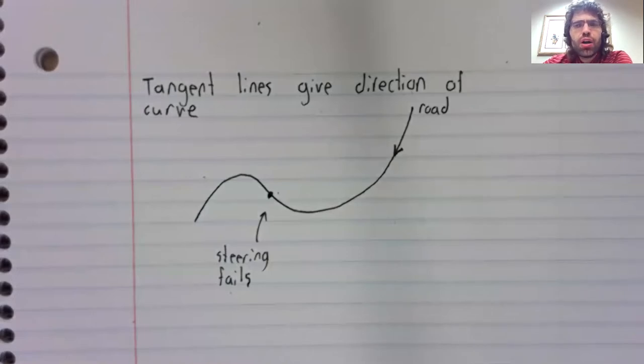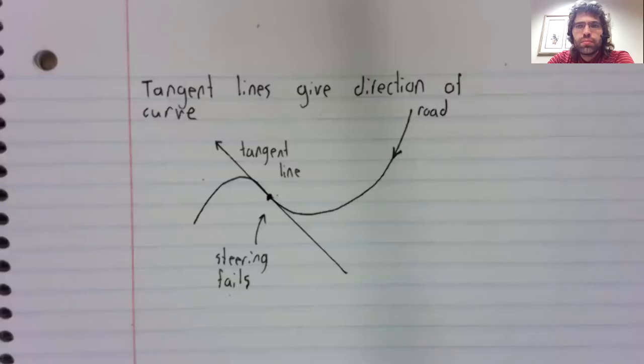What will happen? Well, if the car can't turn, it must go in a straight line until it hits something, but what straight line will it go in? Well, it will go along the tangent line at that point.